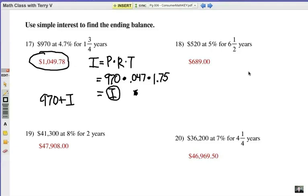Number 18, did you get it right? You're going to take 520 times .05 times 6.5, which is six and a half years. You're going to get your interest answer, and then you're going to add it on to 520. Hope you got that right.